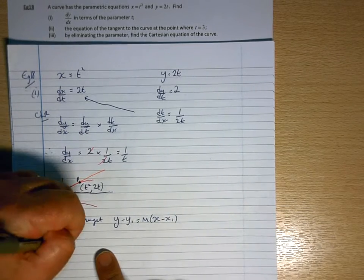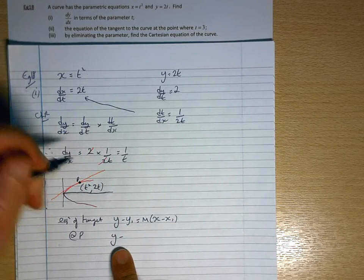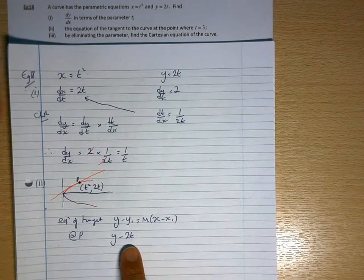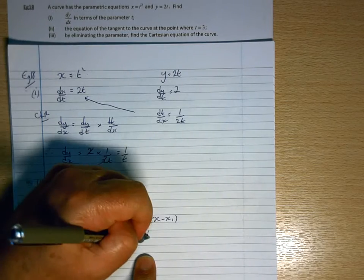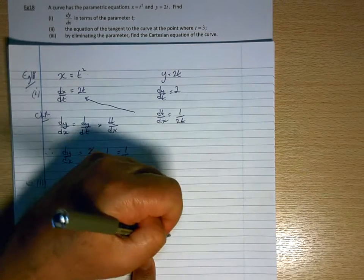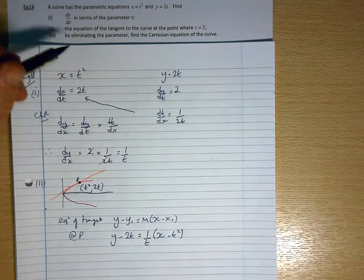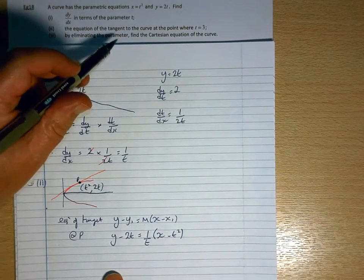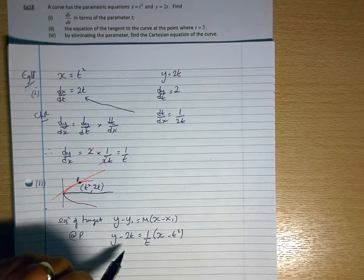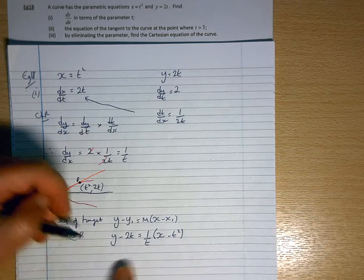So at p, it'll be y minus 2t. The y-coordinate is the general expression 2t. M is the gradient. X is the variable minus t squared is the x1. So the equation of the tangent to the curve at the point where t equals 3. So that's my general equation of the tangent. You can put a different value of t in there. It would move p around the curve and create a different equation of the tangent.